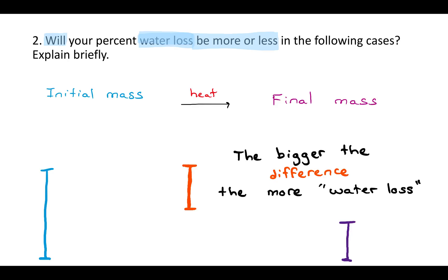You have the initial mass, you heat it up, the water evaporates away, and you're left with just the salt as the final mass. That water evaporating away is the difference between the initial and final mass. If that difference is bigger, then the water loss will be bigger, and if that difference is less, then what we interpret as the water loss will be less. We're going to see how that changes in each of these scenarios.